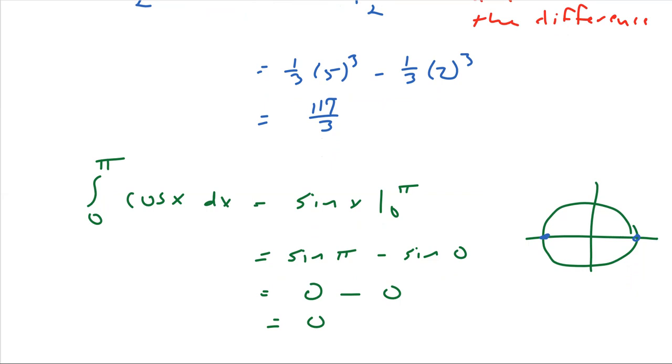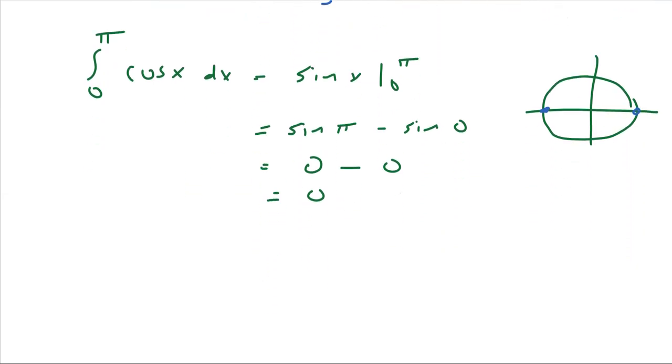Now remember, that actually makes a lot of sense. I might think area being 0 is kind of weird, but cosine, if we recall, looks like this. And remember, this integral gives us the net area. And what we're finding right now is the area from here to here. And you've got the same amount above the axis as you do below. So remember, this is always positive area. Anything below it is negative.